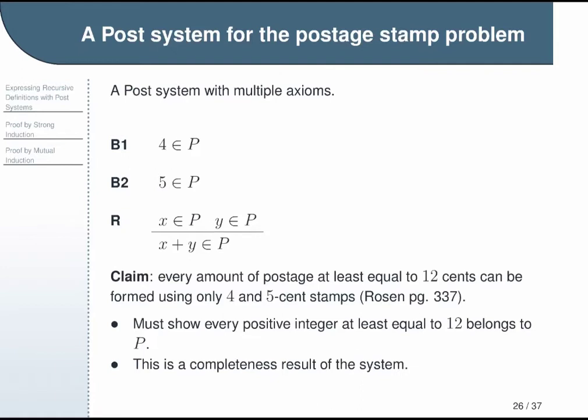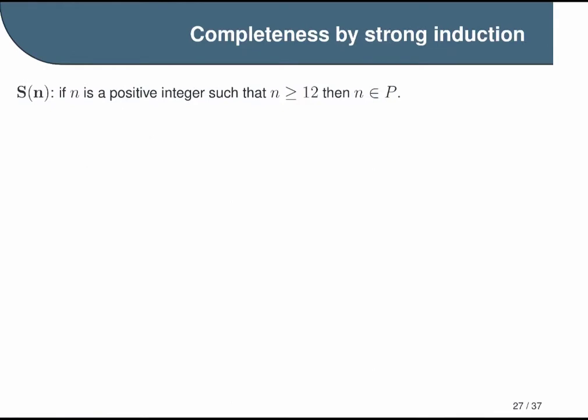Your choice of strong or weak or other type of induction depends on the structure of the definition you're looking at and what you're trying to prove. As with our previous examples, we will begin by rewriting our claim as a parameterized statement, S(n). What we come up with is: if n is a positive integer such that n is greater than or equal to 12, then n is in the set P. We've now broken out this parameter n, which we will use to organize our proof.